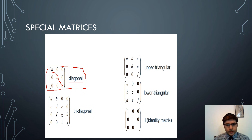Next is the tri-diagonal matrix. A tri-diagonal matrix has all elements equal to zero except for elements in the main diagonal, the immediate diagonal below it, and the immediate diagonal above it. The main diagonal has elements A, D, G and J. The sub-diagonal below has C, F and I, and the super-diagonal above has B, E and H. All elements in these three diagonals should be non-zero and all others zero.